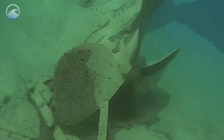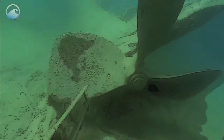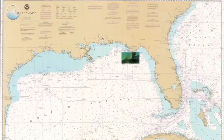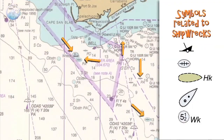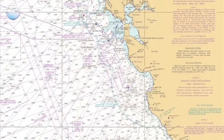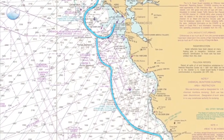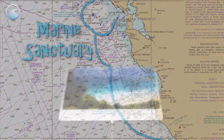Throughout history, a variety of ships have sunk to the bottom of the ocean. The locations of these shipwrecks may be noted on a chart. Blue lines are used to distinguish areas of protected habitat, like a marine sanctuary.